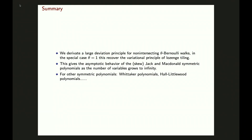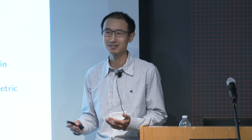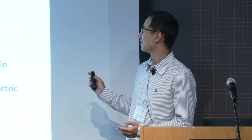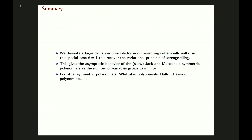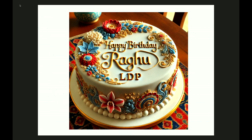Let me quickly summarize. In this talk, I explained a large deviation principle for non-intersecting theta Berlouli random walks. When theta = 1, it recovers lozenge tilings. These large deviation results also give asymptotics of Jack symmetric polynomials and some Macdonald symmetric polynomials. There remain many other symmetric polynomials, like Whittaker polynomials or Hall-Littlewood polynomials, where it would be interesting to see if this approach extends to prove large deviations, which could then be used to study law of large numbers or large deviations for polymer models or vertex spin models. Finally, although there are still maybe four months until Raghu's next birthday, I want to say happy early birthday and thank him for his many great contributions to math and great ideas.